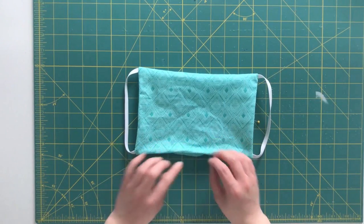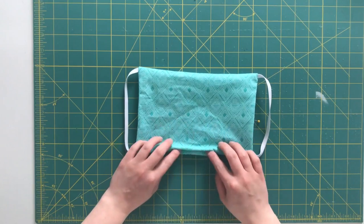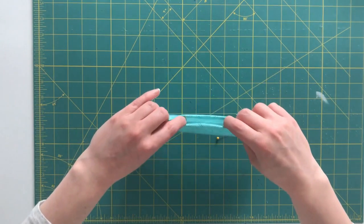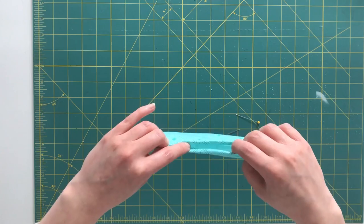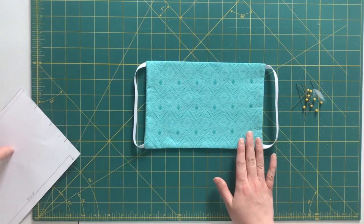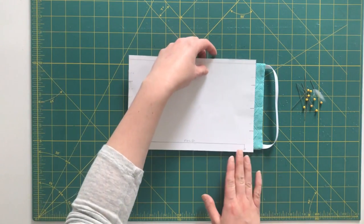Now I'm going to take this over to my ironing board, give it a good press, and tuck in the seam allowance on the part that I'm going to need to shut close. My mask is pressed, it's time to mark my pleats using my pattern.